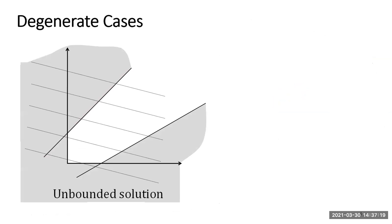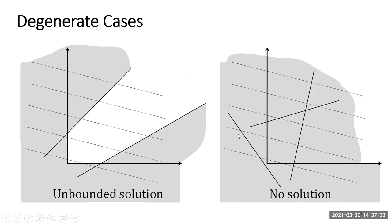Here's a degenerate case: the solution approaches infinity — it's unbounded, so the feasible region goes towards infinity. In the opposite case, we have no solutions; no x can possibly satisfy all the feasibility conditions.